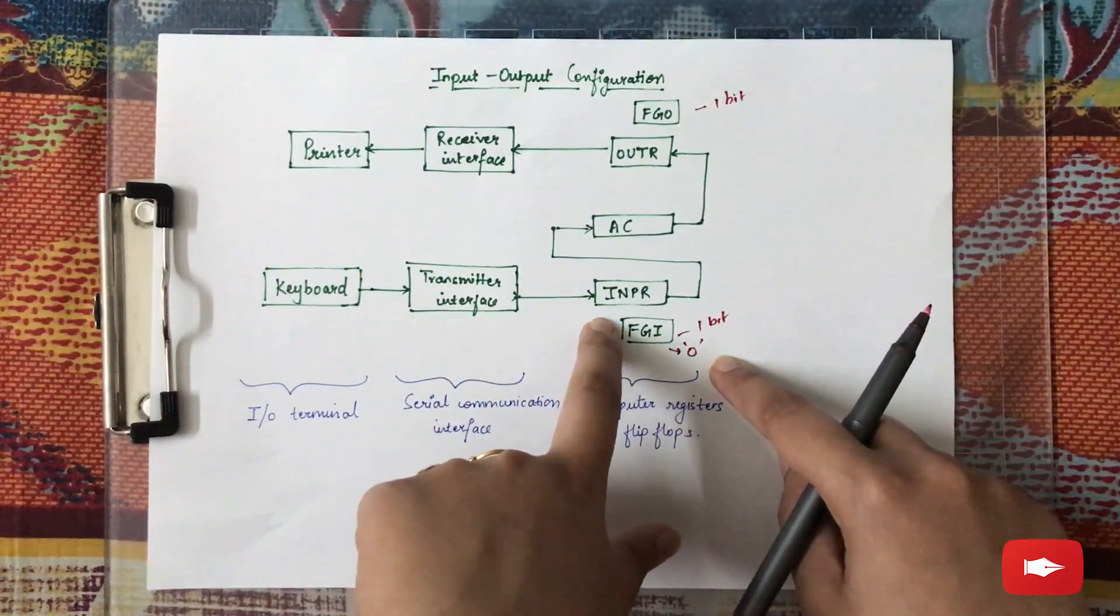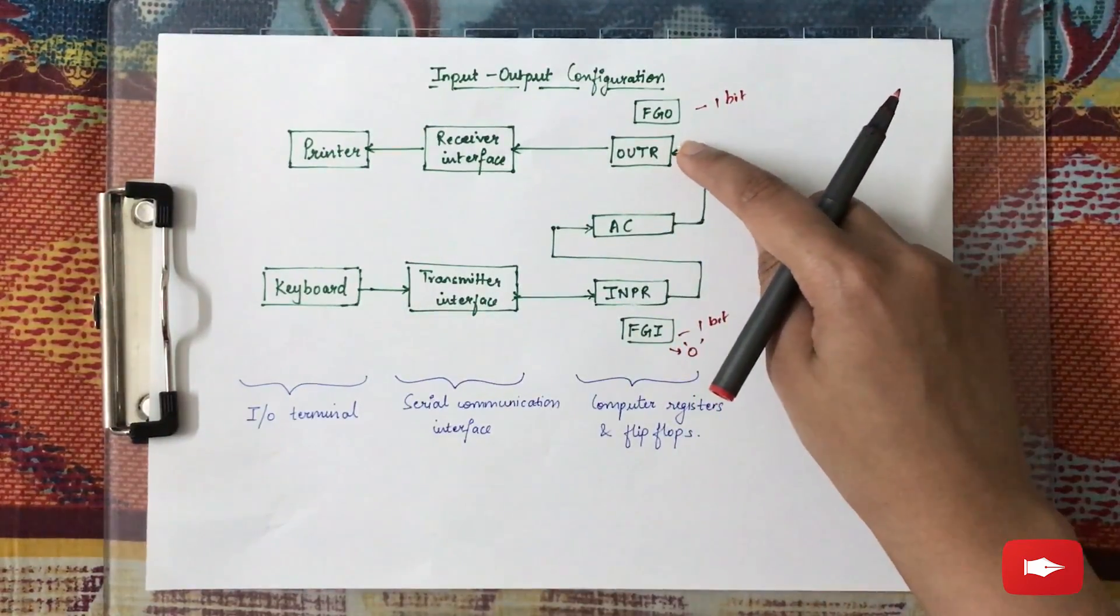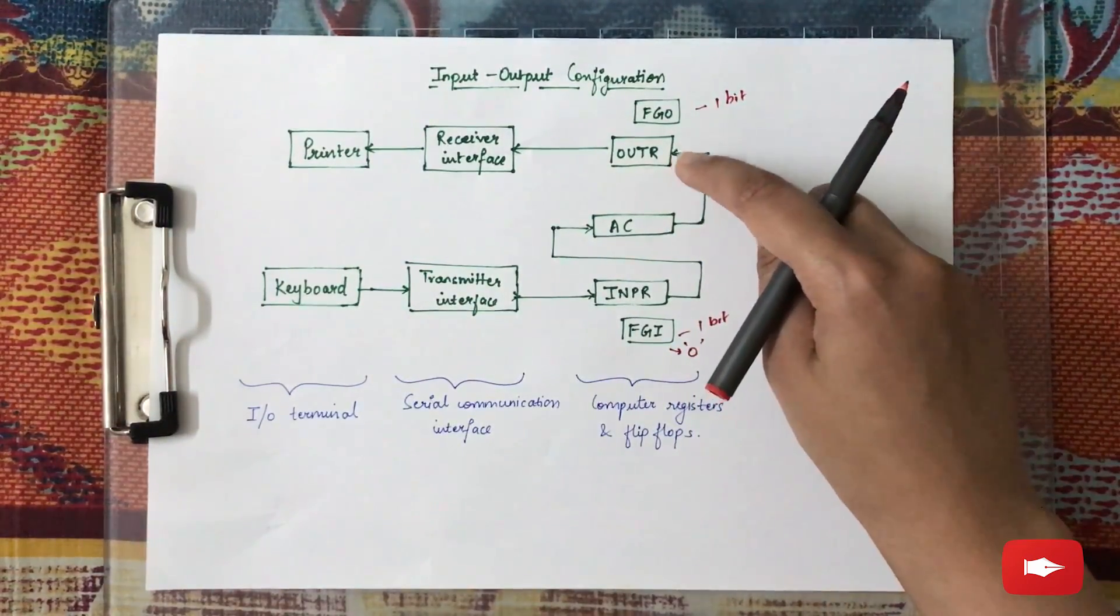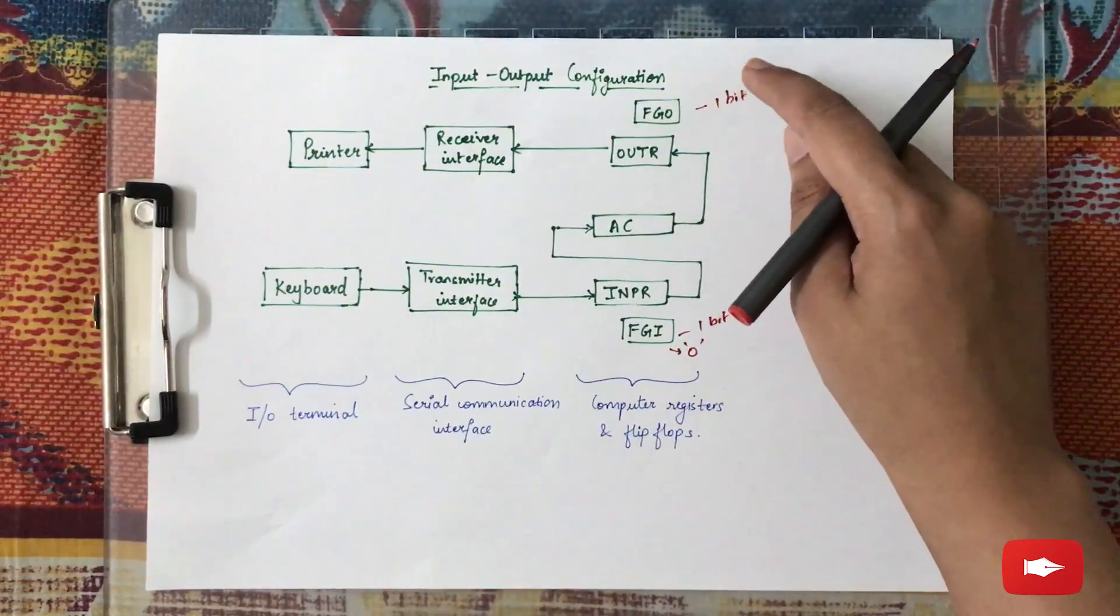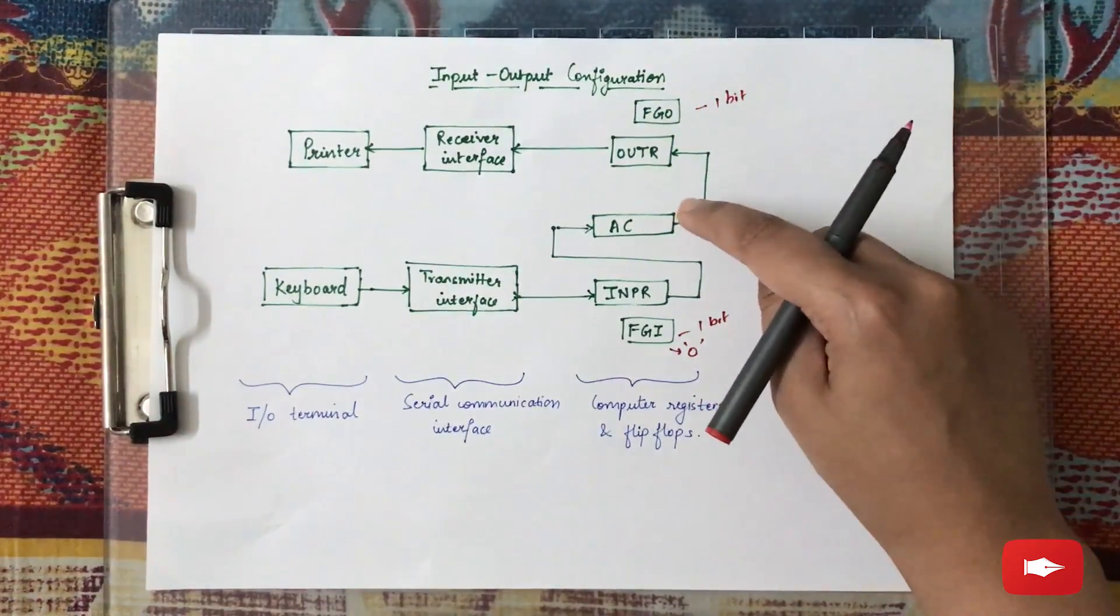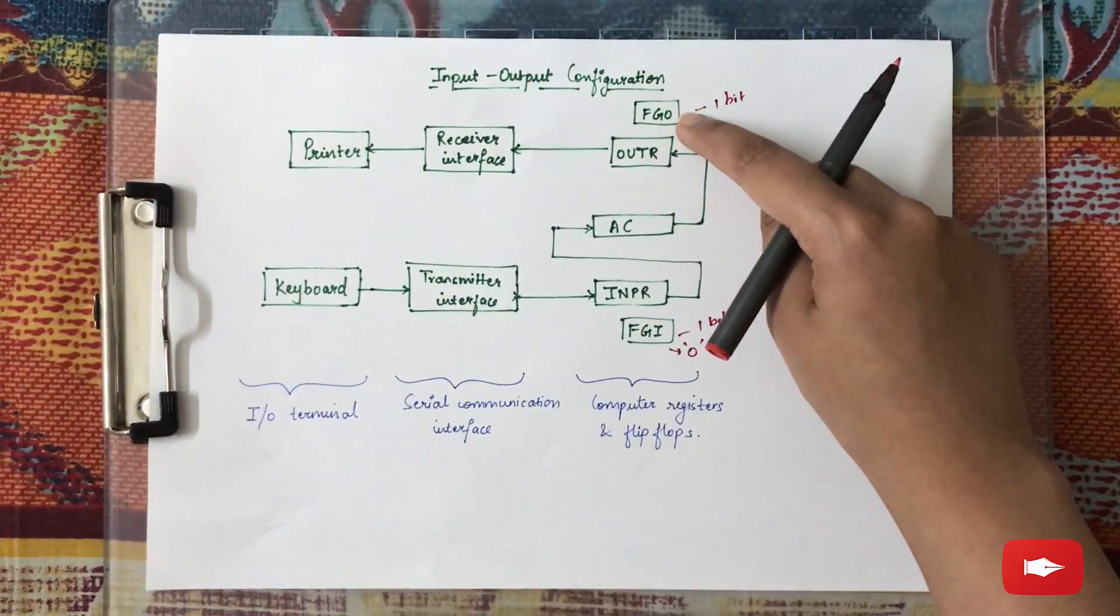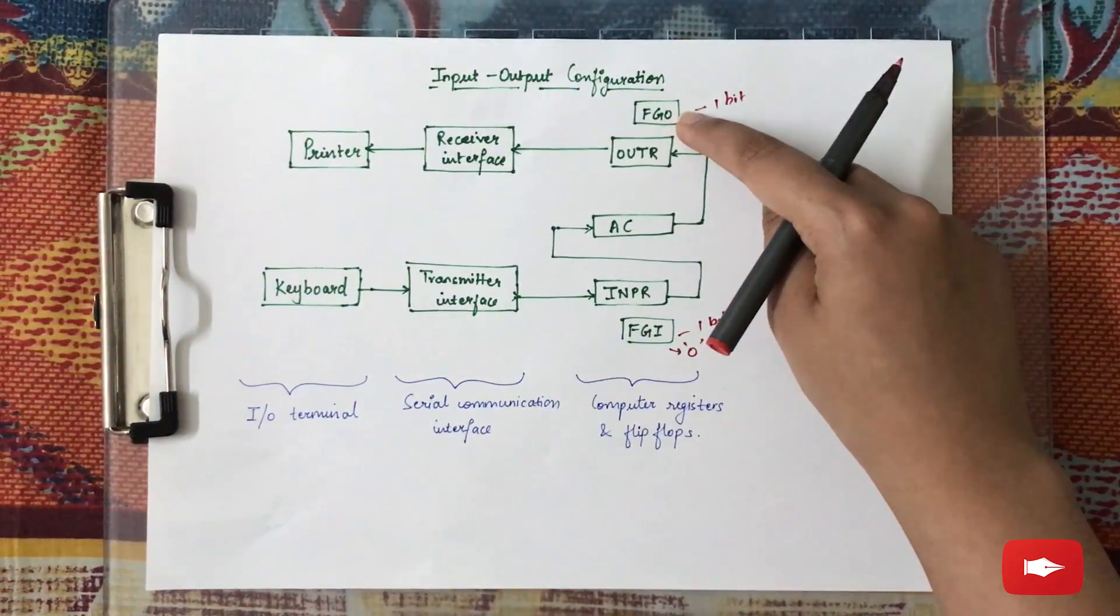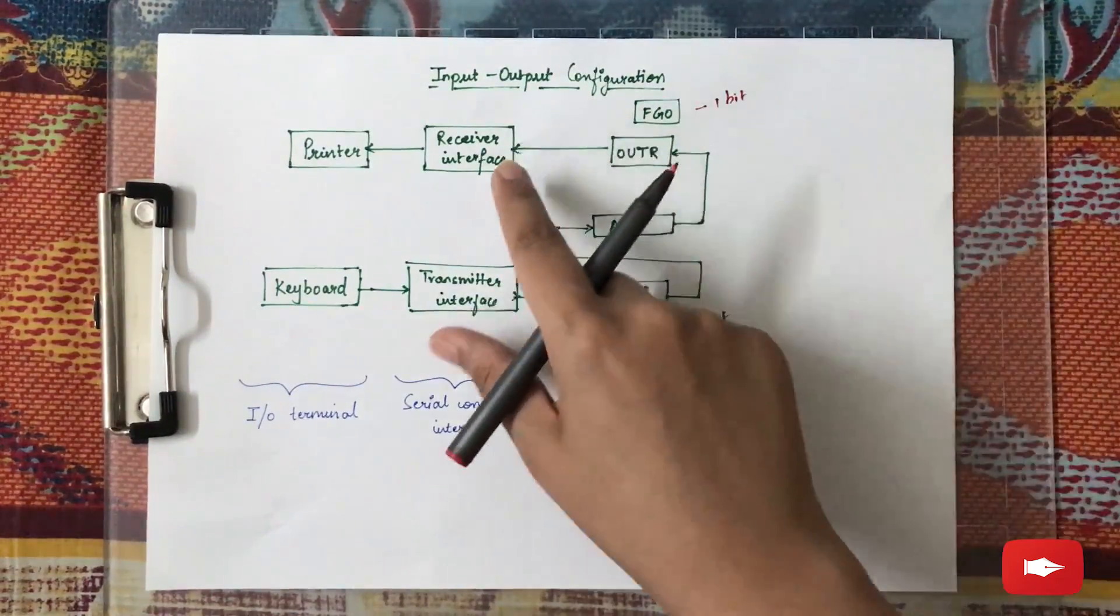Now that information is present in the accumulator, and OUTR, that is the output register, is ready to accept that information. Meanwhile, FGO is already set, but as soon as the information from the accumulator enters the output register, the value of FGO, that is the output flag, is set to 0. Similarly, it passes through the interface and is sent to the output device, which is the printer here.